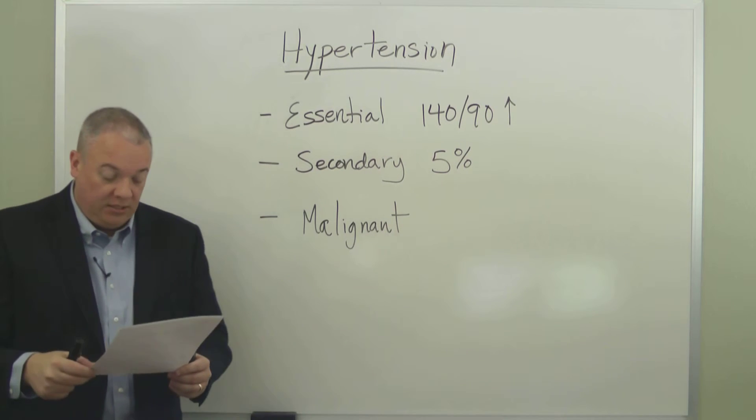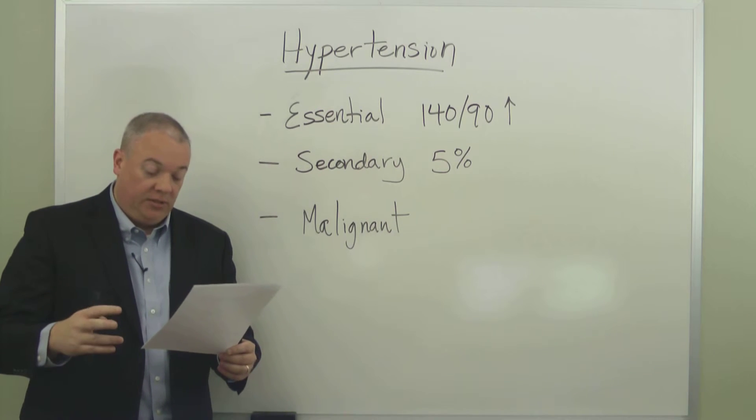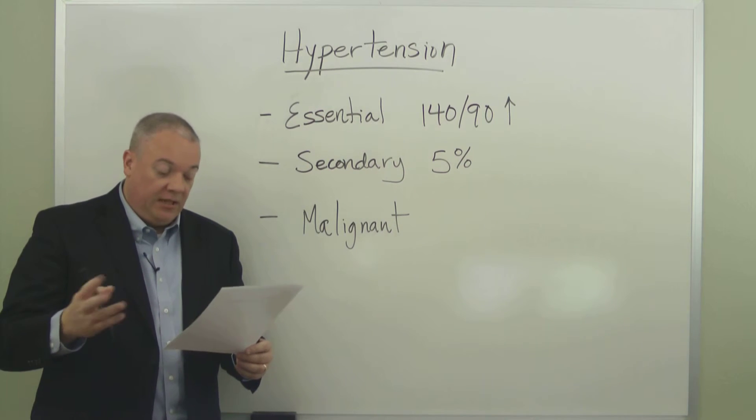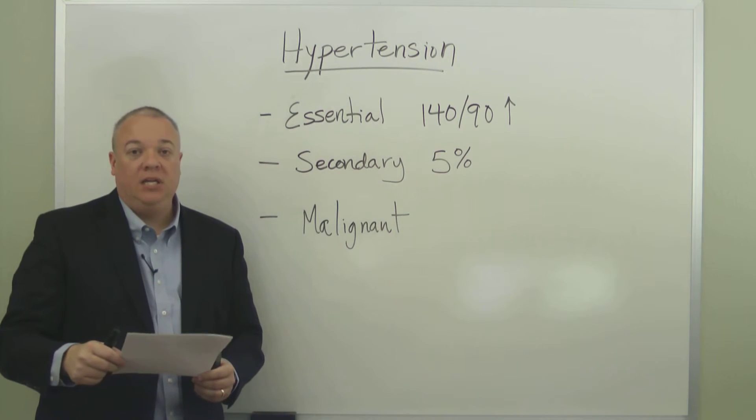This is usually done with medication, such things as nitroprusside, nitroglycerin, clonidine. These are the most common medications used to treat malignant hypertension.